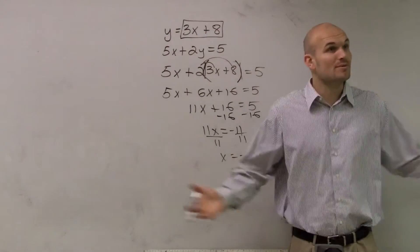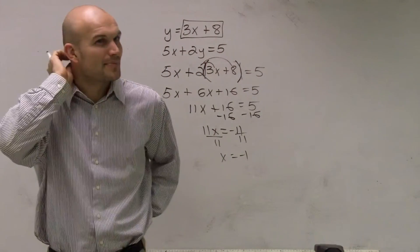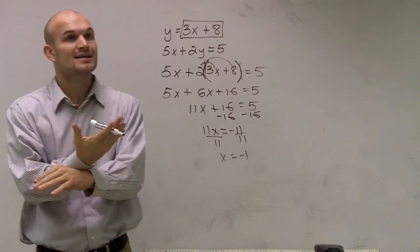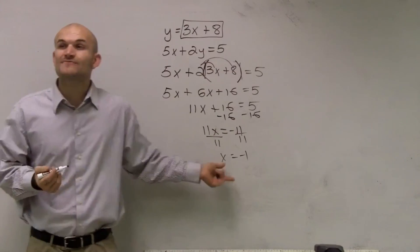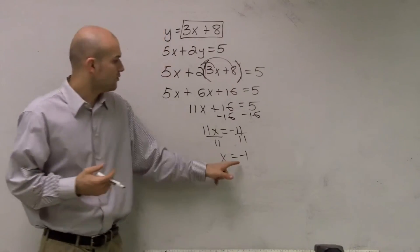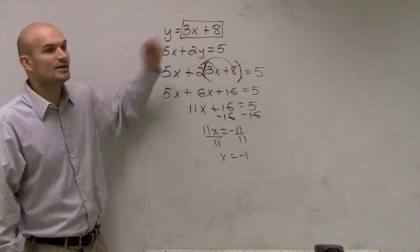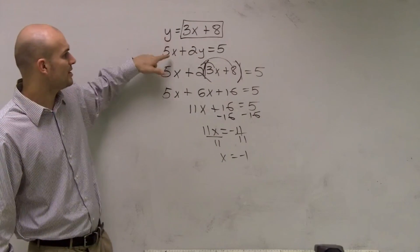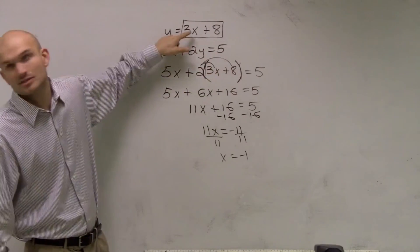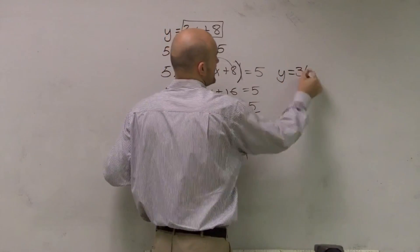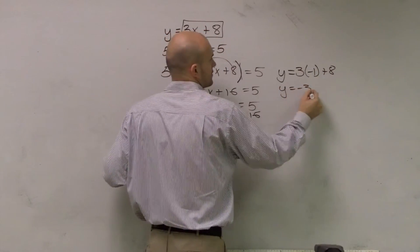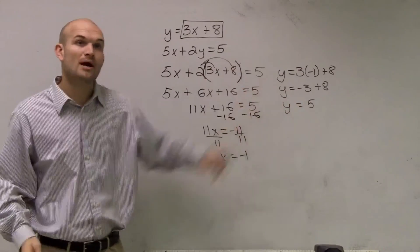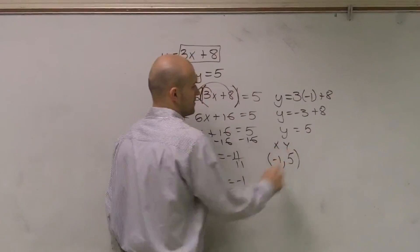We have x equals negative 1, but remember we're solving a system, so we need both the x and y coordinates. Since y is already solved in the first equation, I plug in x equals negative 1: y equals 3 times negative 1 plus 8, so y equals 5. The solution is x equals negative 1 and y equals 5, or the coordinate point (negative 1, 5).